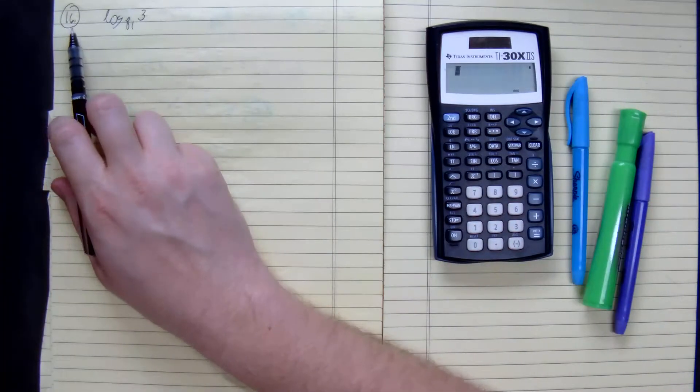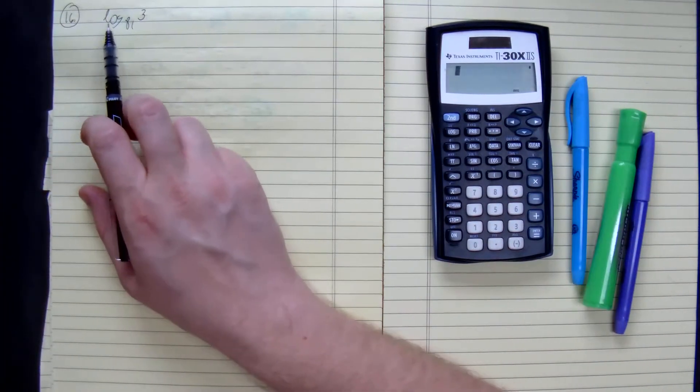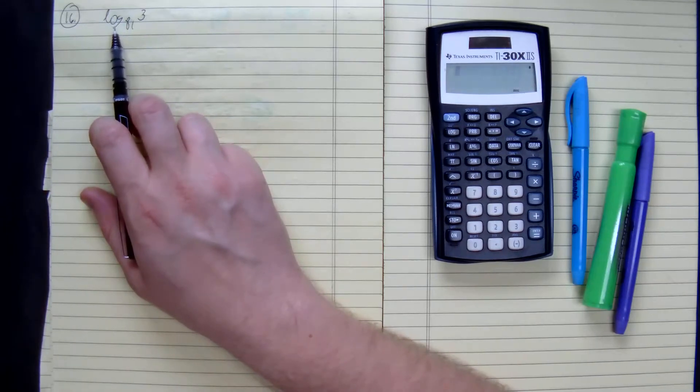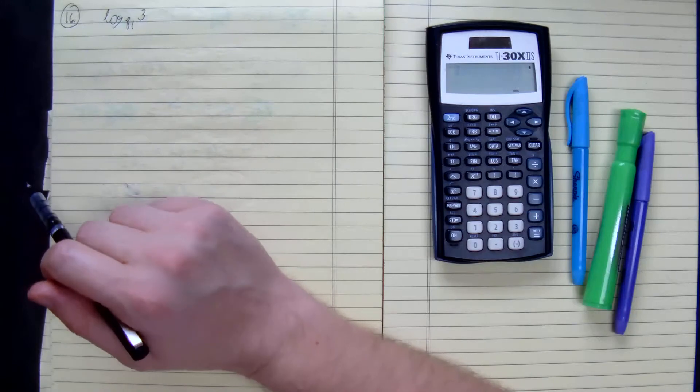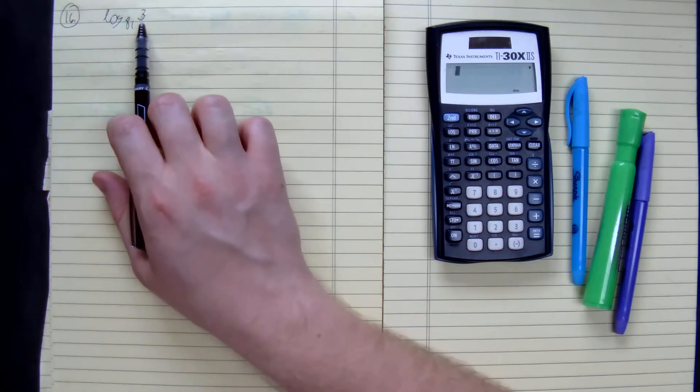We'll look at number 16. We want to evaluate log base 81 of 3. So how do we get 81 to be 3?